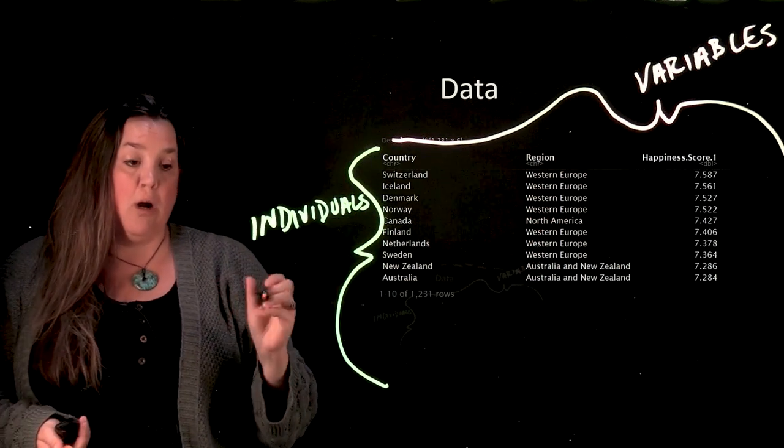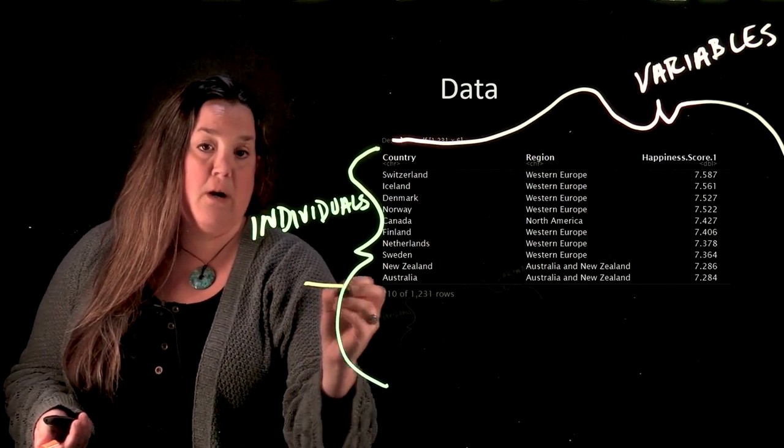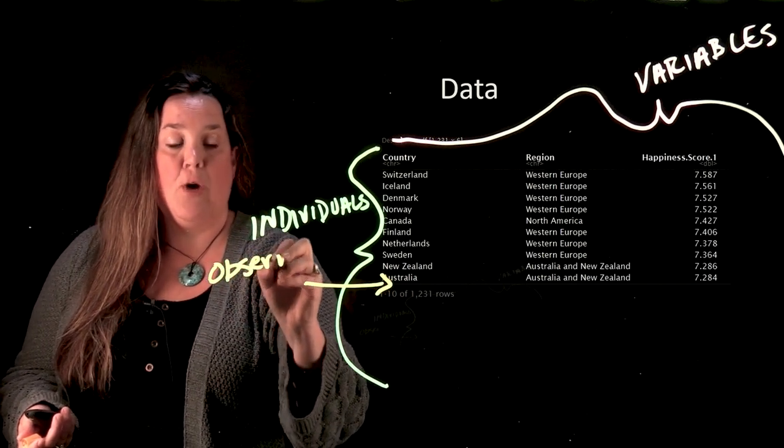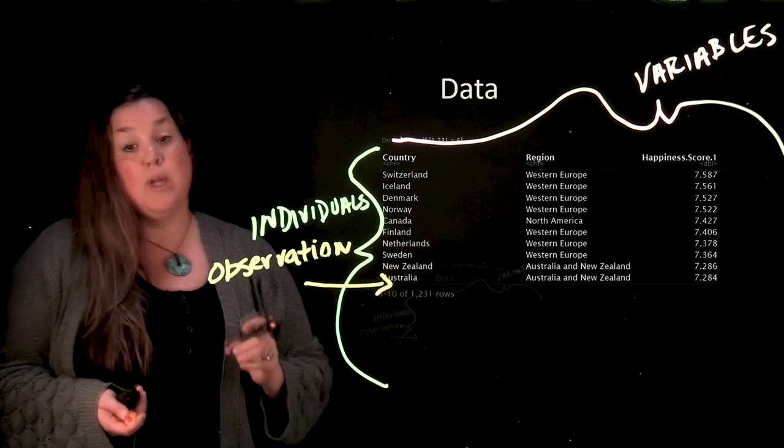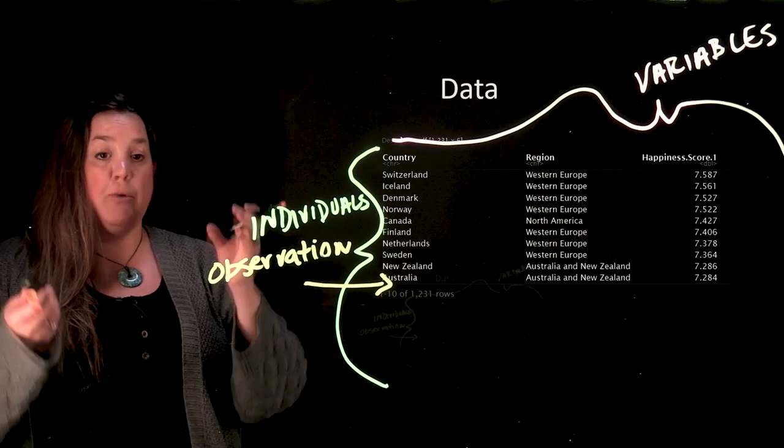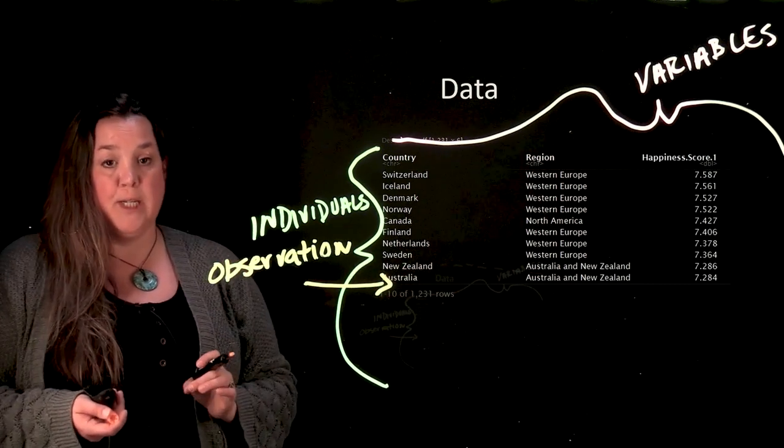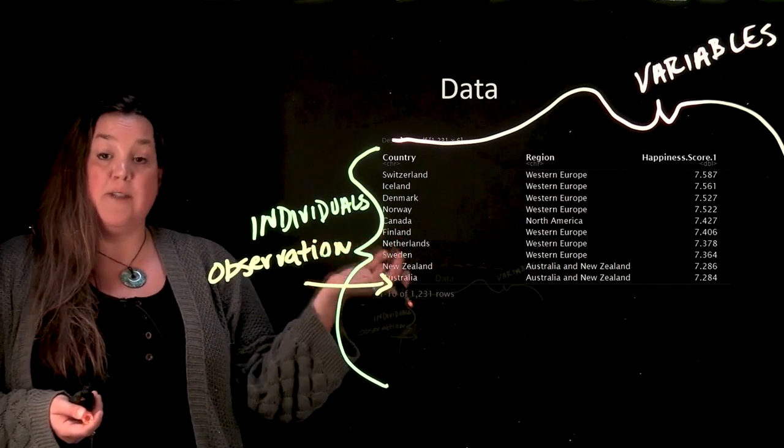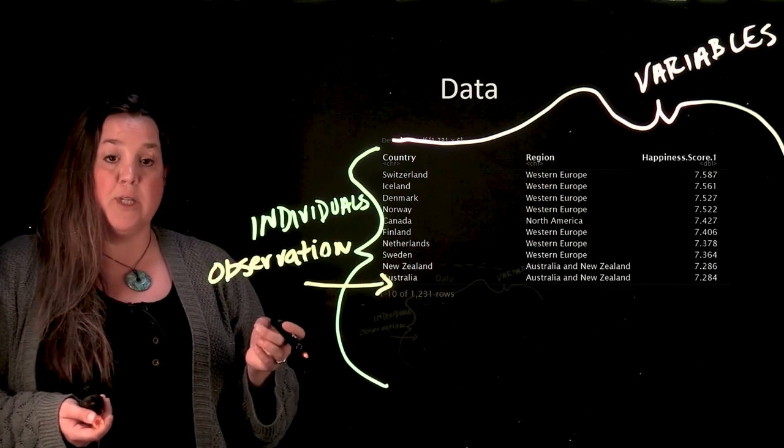Then there's one more basic term that I want to make you aware of. Here, it's going to be what we call an observation. So an observation is going to be one row and their unique information. So if it's people that you're looking at, it would be that person and all of their unique information would be represented in that row. Here, because we're talking about countries, each country has their own row and everything represented in that row is going to be unique to that country.